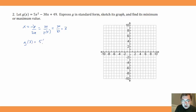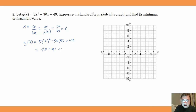g(3) = 5(3²) - 30(3) + 49. That is 5 × 9 = 45, minus 30 × 3 = 90, plus 49. So 45 - 90 = -45, then -45 + 49 = 4. The vertex is (3, 4).